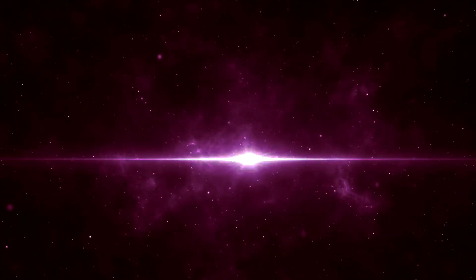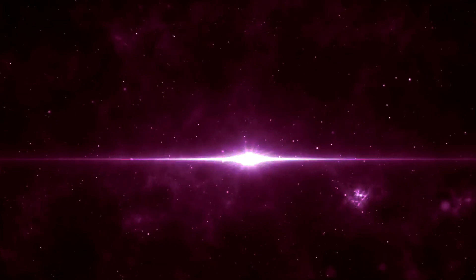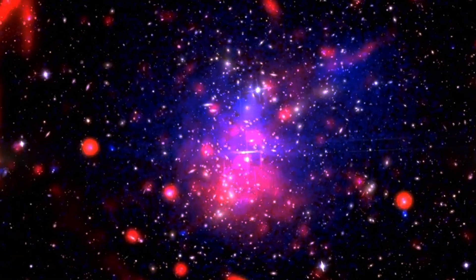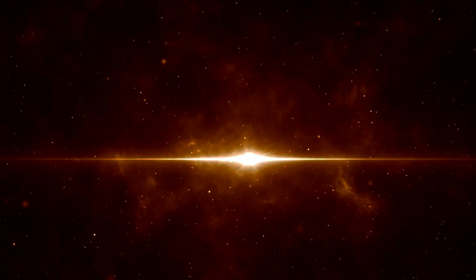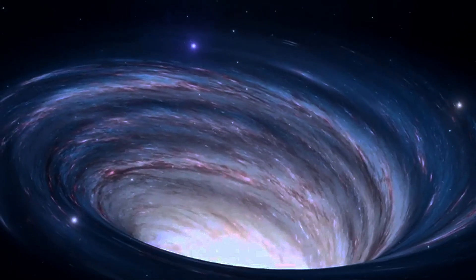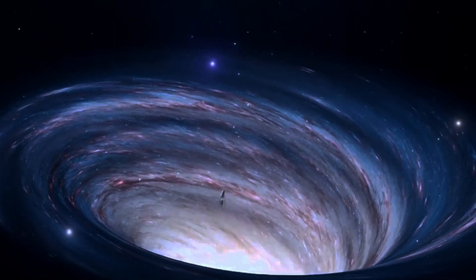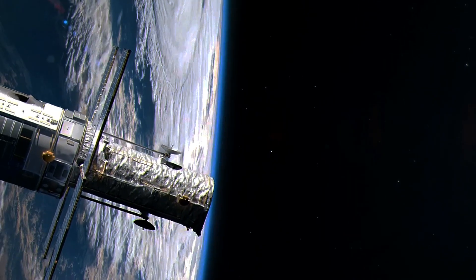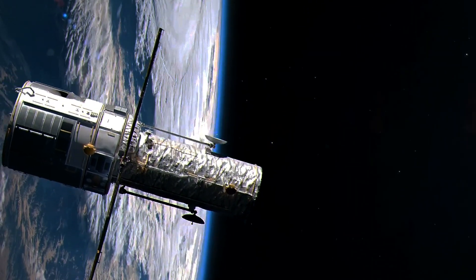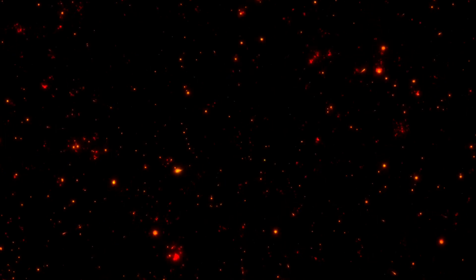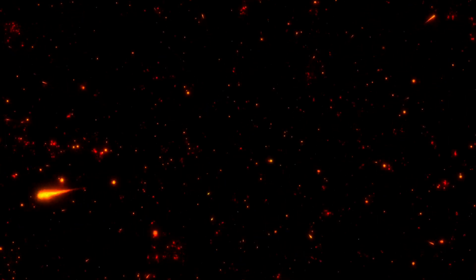That light will have, encoded within it, a tremendous amount of information. Based on the total amount of brightness we observe that light to possess, as long as we know how intrinsically bright the object emitting it is, we can determine how far away that object is. Based on the apparent size we observe that light emitting object to possess, as long as we know how intrinsically large the object is, we can, independently of the first method, determine how far away that object is.